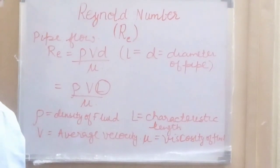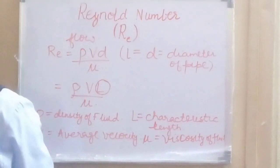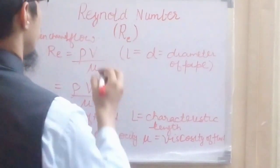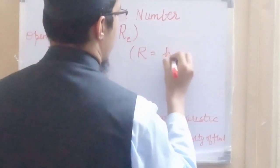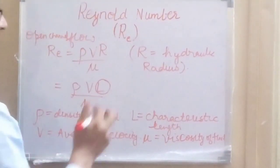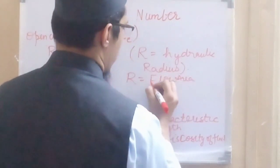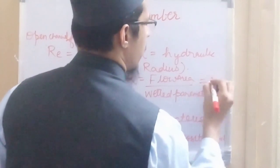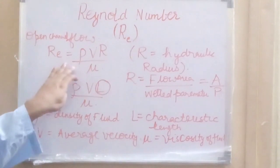In the case of open channel flow, the characteristic length changes to r, where r is the hydraulic radius. The hydraulic radius is the ratio of flow area to wetted perimeter, generally represented as A divided by P. So in case of open channel flow, the Reynolds number will be equal to rho·v·r divided by mu.